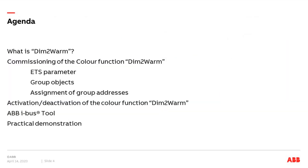Let's look at the agenda. We begin by discussing DIMM-TO-WARM — what it is and why we can fulfill it with our DALI Gateways. Then we cover the commissioning of the color function DIMM-TO-WARM, the ETS parameter settings, group objects, and how to link them between the control element and the DALI Gateway. We'll also look at how to activate or deactivate the DIMM-TO-WARM function, how the IBAS tool supports the DALI Gateway, and finish with a practical demonstration.